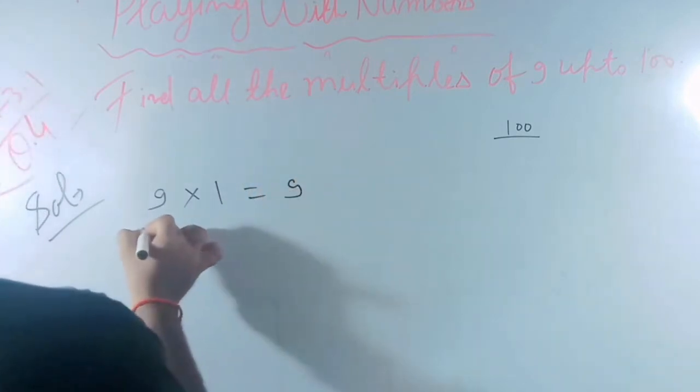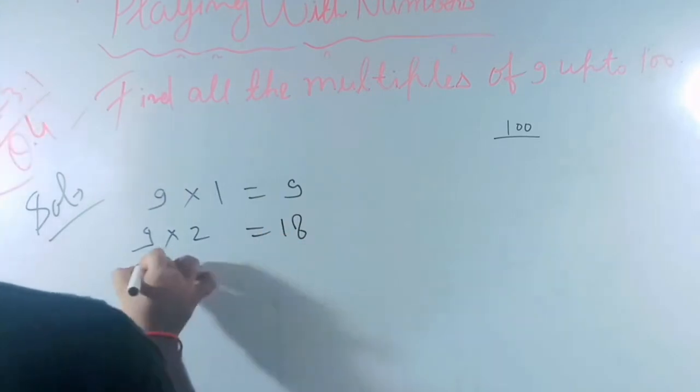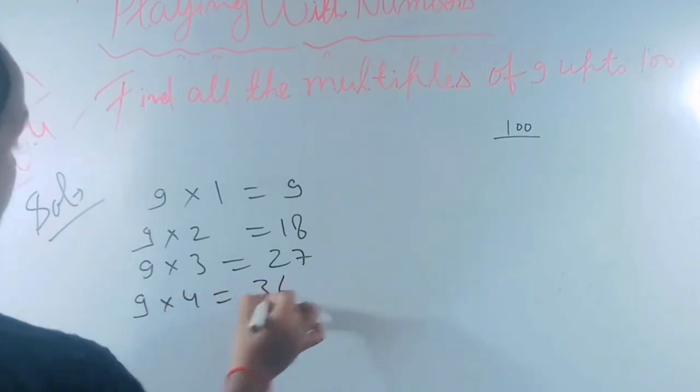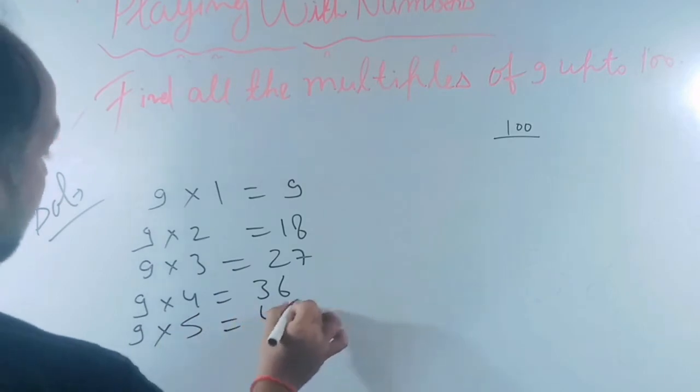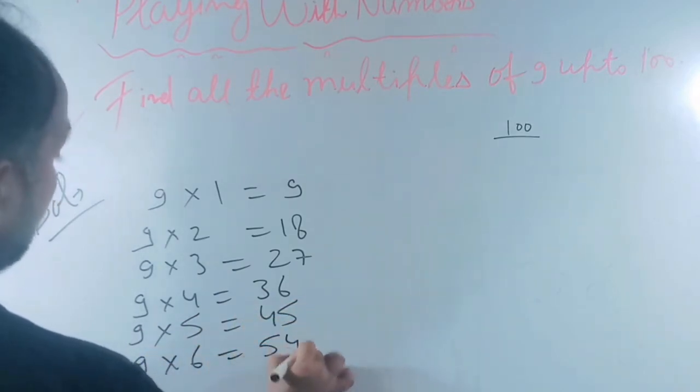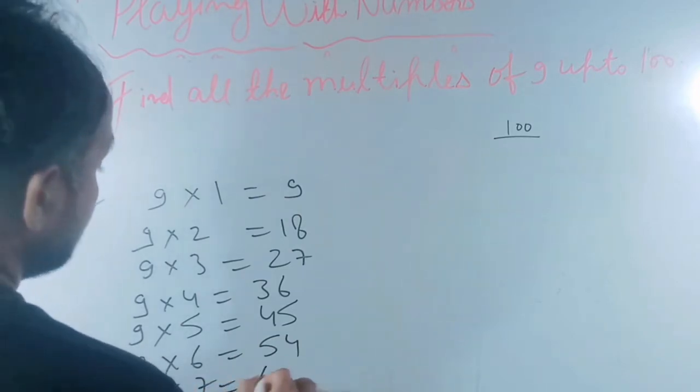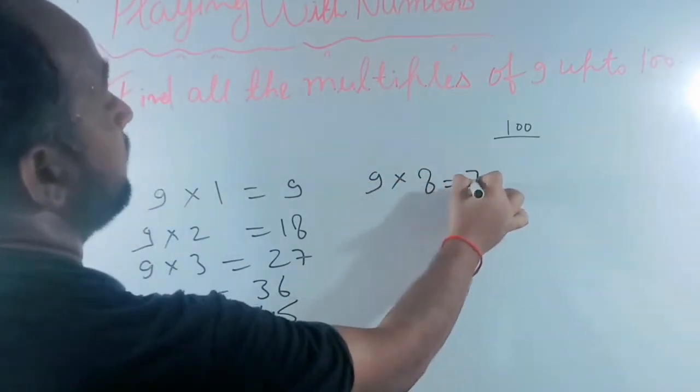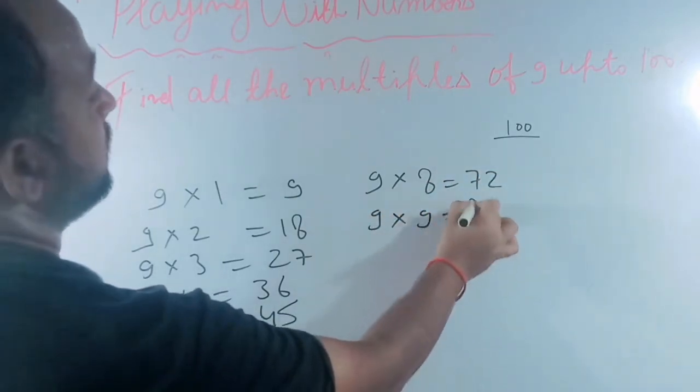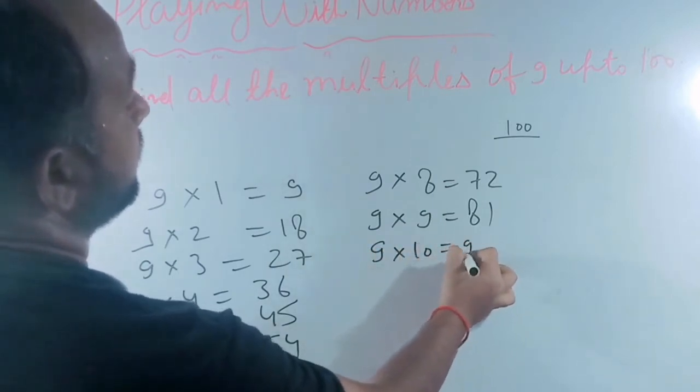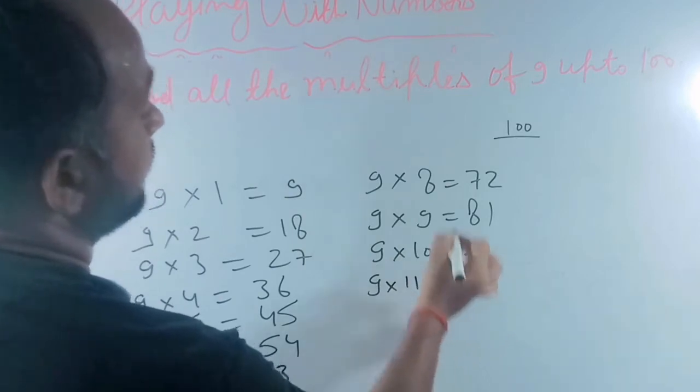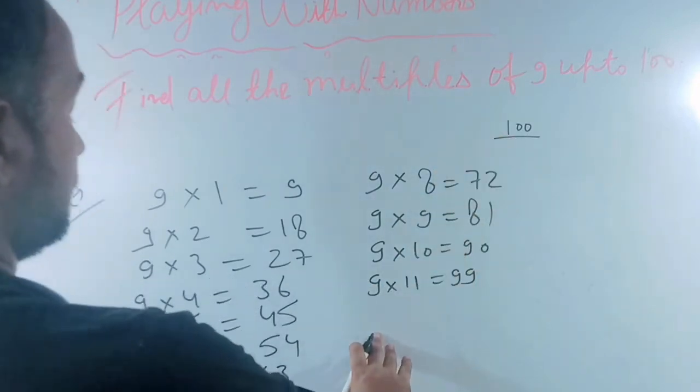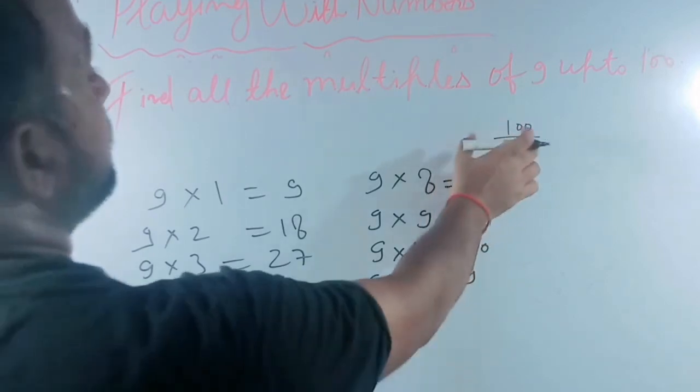We will find: 9 multiply 1 equals 9, 9 multiply 2 equals 18, 9 multiply 3 equals 27, 9 multiply 4 equals 36, 9 multiply 5 equals 45, 9 multiply 6 equals 54, 9 multiply 7 equals 63, 9 multiply 8 equals 72, 9 multiply 9 equals 81, 9 multiply 10 equals 90, 9 multiply 11 equals 99.